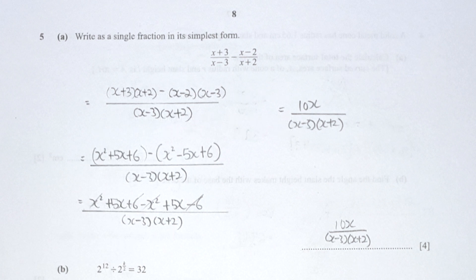Question 5a: I changed the denominators to be the same — I multiplied (x + 3) with (x + 2) and (x − 2) with (x − 3). The negative sign plays an important role, so remember to put brackets so you don't miss its effect. The negative sign multiplied into x² − 5x + 6 turns it to negative x² + 5x − 6. Incorporating this with our front terms gives 10x over (x + 3)(x + 2). I wouldn't expand the denominator as they want it in simplest form.